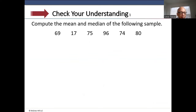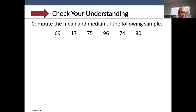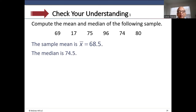Let's compute the mean and median of the following sample. Clear memory, stat 1, and enter the dataset in L1: 69, 17, 75, 96, 74, 80. Then stat, calc, number 1 — one-variable stats — list L1, calculate. The mean is 68.5 and the median is 74.5. Since mean is less than the median, this dataset is skewed to the left — negatively skewed.